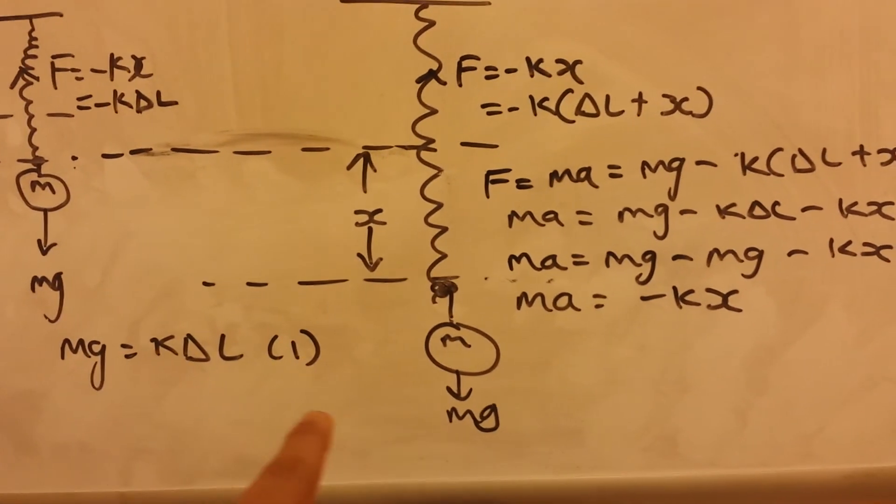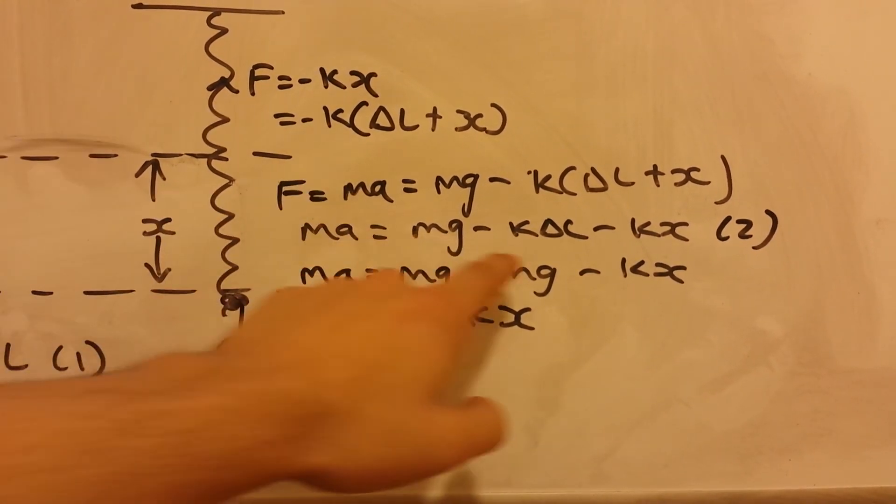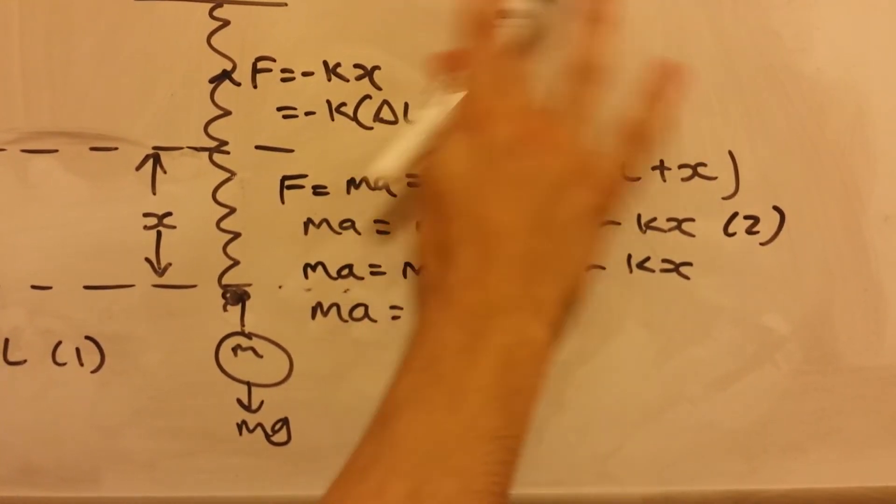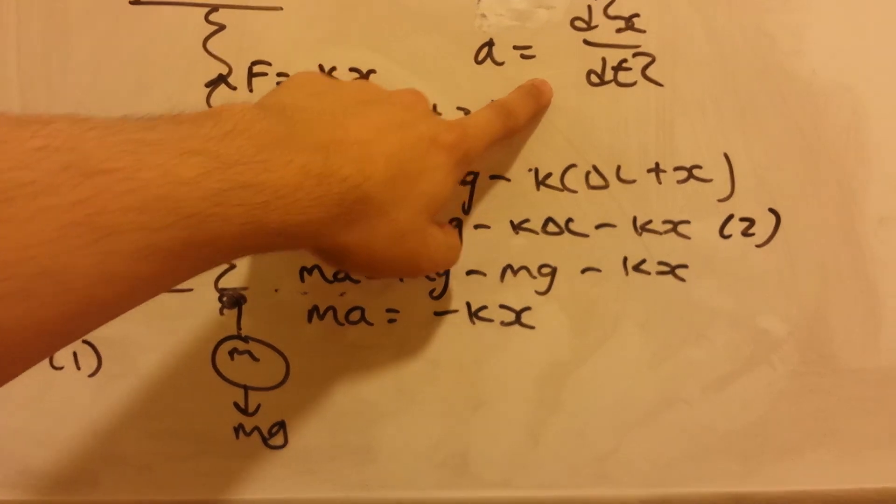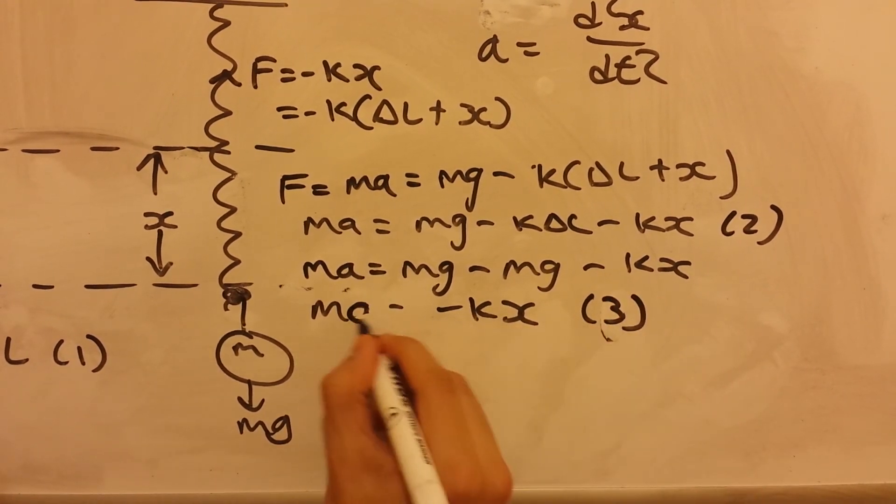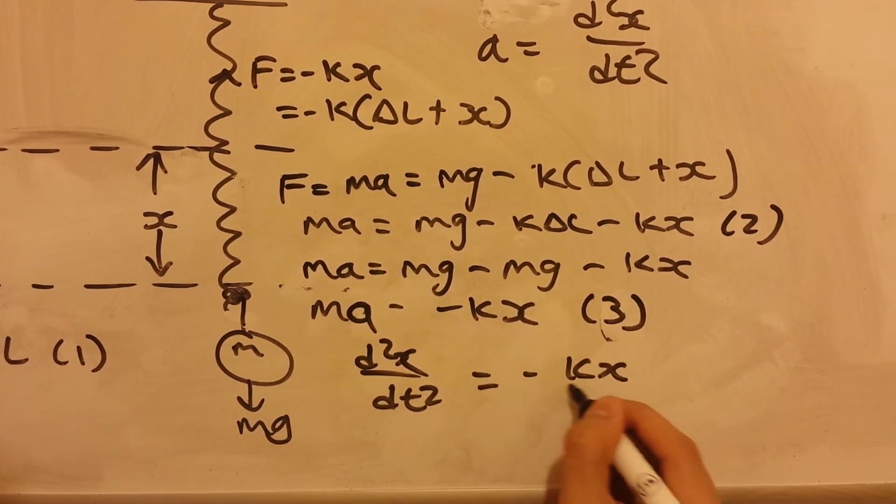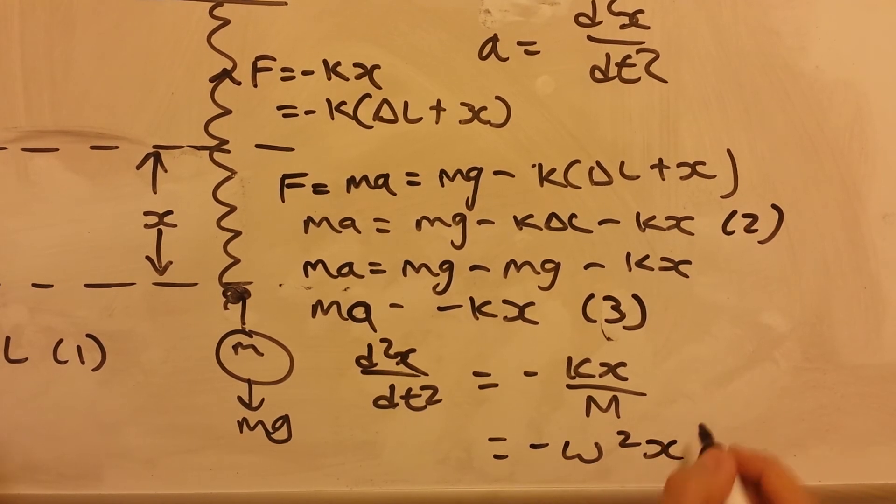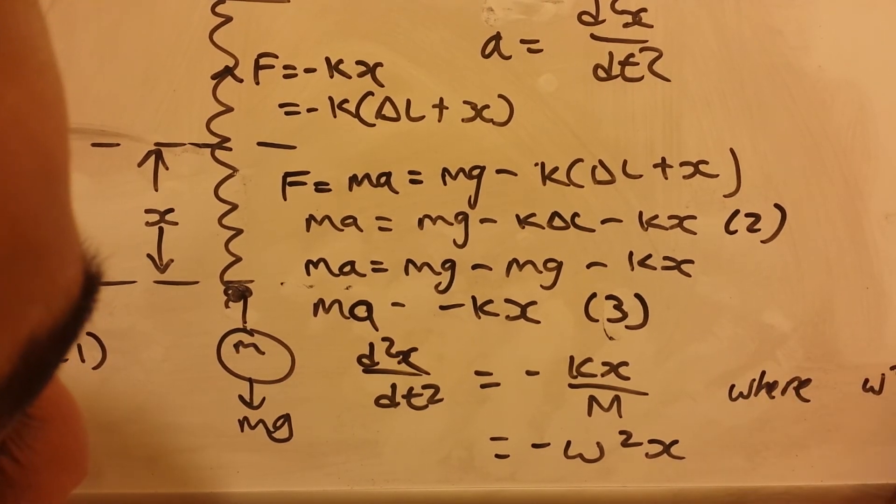So we substitute this equation into mg into that. And we know that a is equal to the second derivative, the second derivative of displacement. So we can substitute this into this equation, equation 3, and then divide both sides by m, and we get, and this could be written as, where omega squared is equal to k over m.